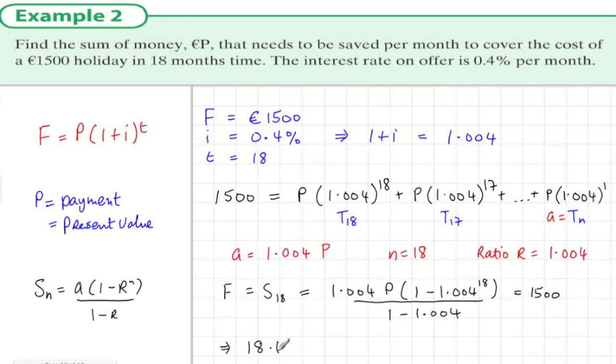That's equal to 1500, so divide both terms by 18.6998 and we get that P equals 80.21, and that's how we do this question.